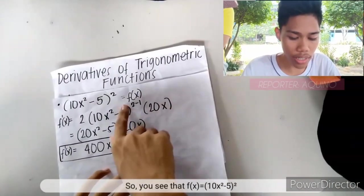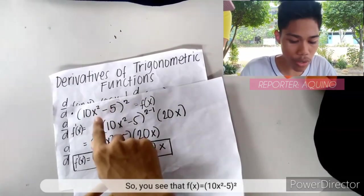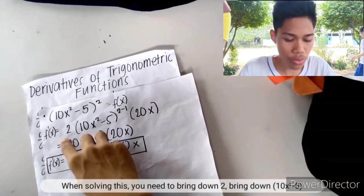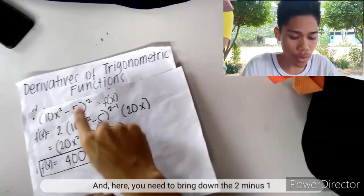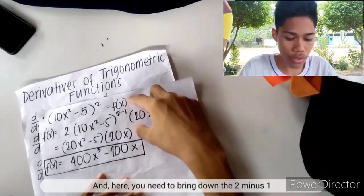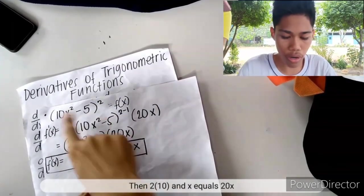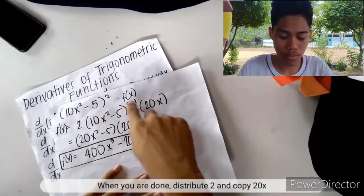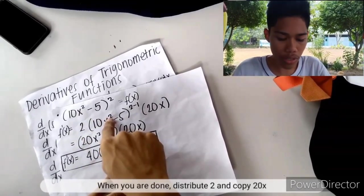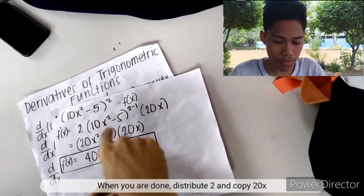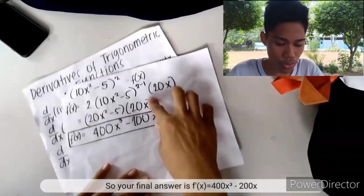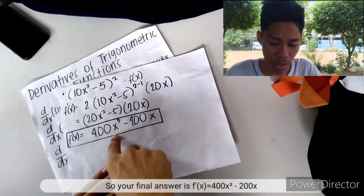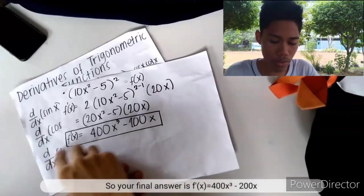For the second chain rule example, f(x) equals (10x squared minus 5) to the power of 2. Bring down the 2, keep 10x squared minus 5, subtract the exponent by 1, then multiply by the derivative of the inside which is 20x. After substituting, 2 times 10 gives 20, so f prime(x) equals 400x cubed minus 100x.